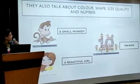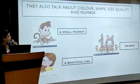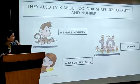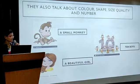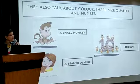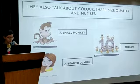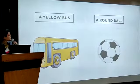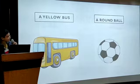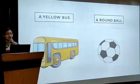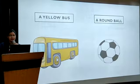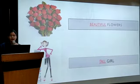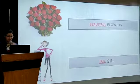As you can see — small monkey. Here, 'small' is telling us the size of the monkey, so it's an adjective. 10 boys, beautiful girl, a yellow bus, a round ball. Now let us see some more examples of adjectives.